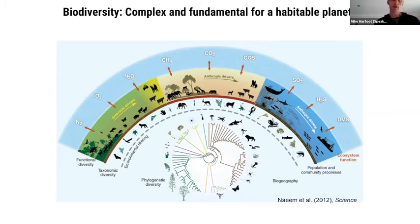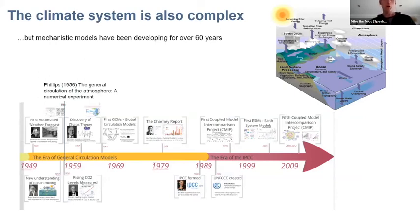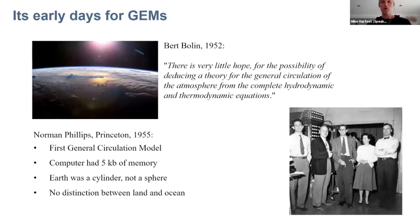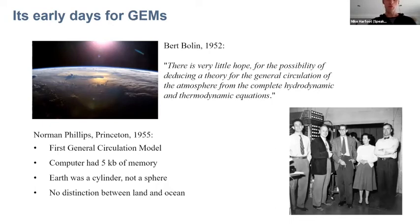Perhaps because of that complexity, many approaches to modeling ecosystems — particularly from a biodiversity perspective — take a statistical point of view. I'm going to make the argument that while the climate system is also complex, we've had mechanistic models of the whole climate system developing for over 60 years, from the first general circulation model put forward in 1956. I'll give a health warning: general ecosystem models are in early days — we're back in the 1950s–60s of climate models. The simplicity of the model compared to reality is something to bear in mind, but we are developing it with lots of promise.